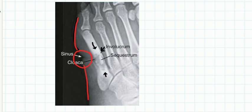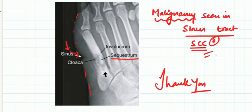So the often-asked questions are about sequestrum, involucrum, and cloaca, as well as the malignancy of the sinus tract. This sinus is what is opening over the skin.